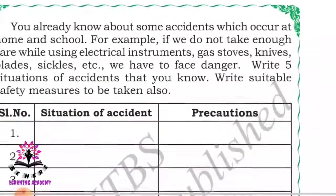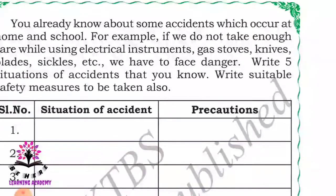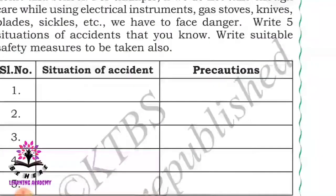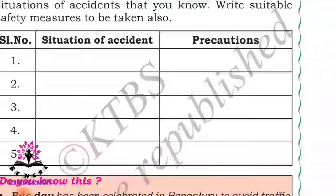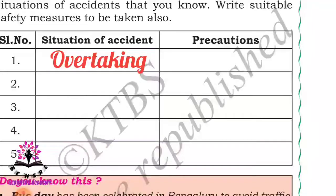You already know about some accidents which occur at home and at school. For example, if we do not take enough care while using electrical instruments, gas stoves, knives, blades, sickles, etc., we face danger. Write five situations of accident that you know and suitable safety measures to be taken. One situation is overtaking - you might have observed city buses overtaking each other, which causes accidents. The precaution is to go slow and steady so that we are safe.